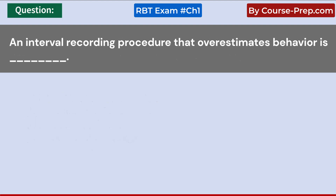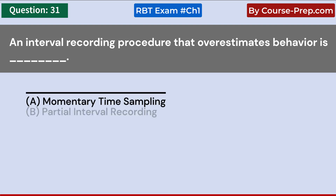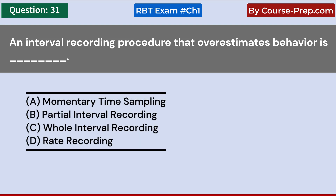An interval recording procedure that overestimates behavior is: A. Momentary time sampling. B. Partial interval recording. C. Whole interval recording. D. Rate recording. Answer B: Partial interval recording.